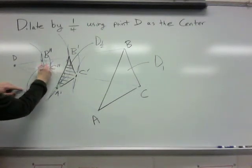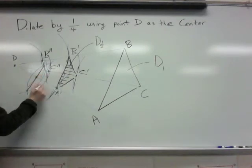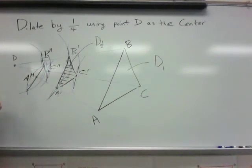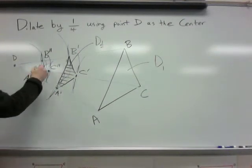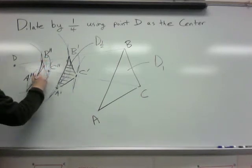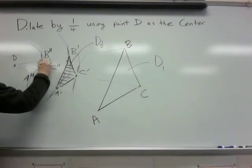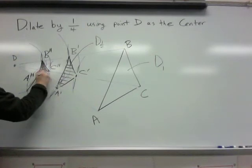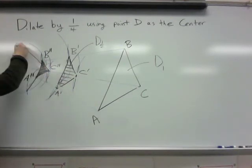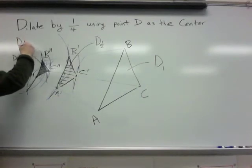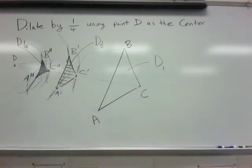Alright, so that'll be my brand new, brand new point A. So I can label that A double prime. All that could be left to do is to connect those together. And I've actually created a triangle that has one quarter the length of the original. So this would be a dilation of one quarter from the original pre-image here.